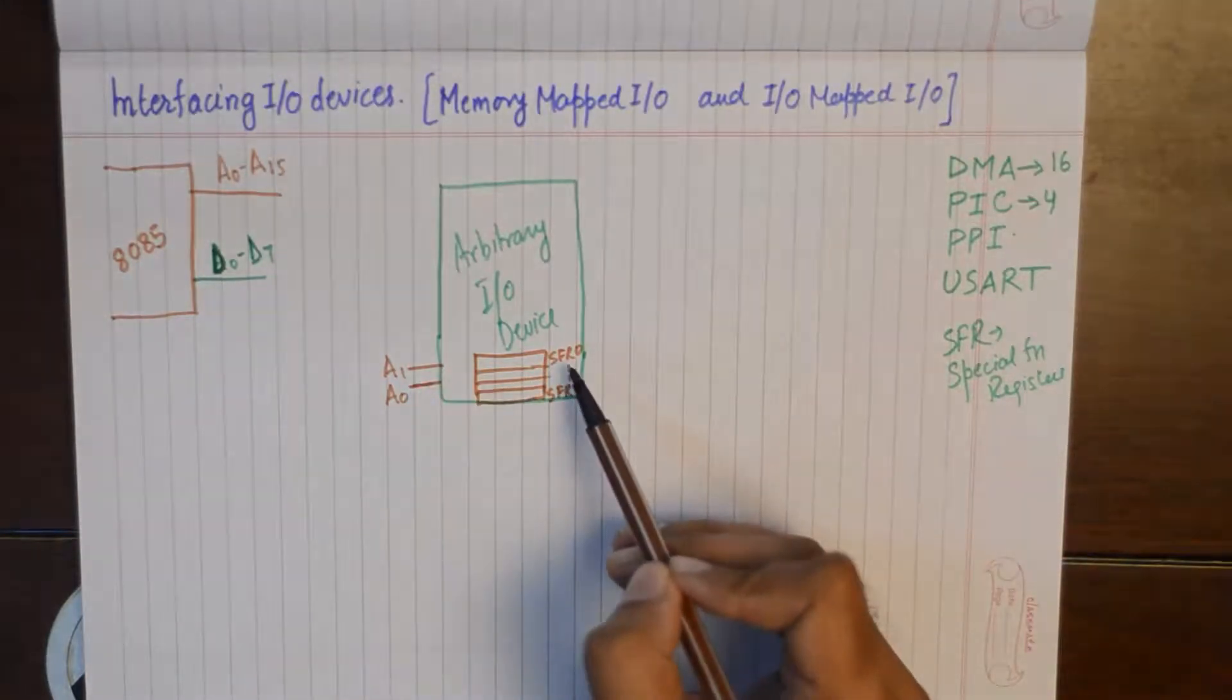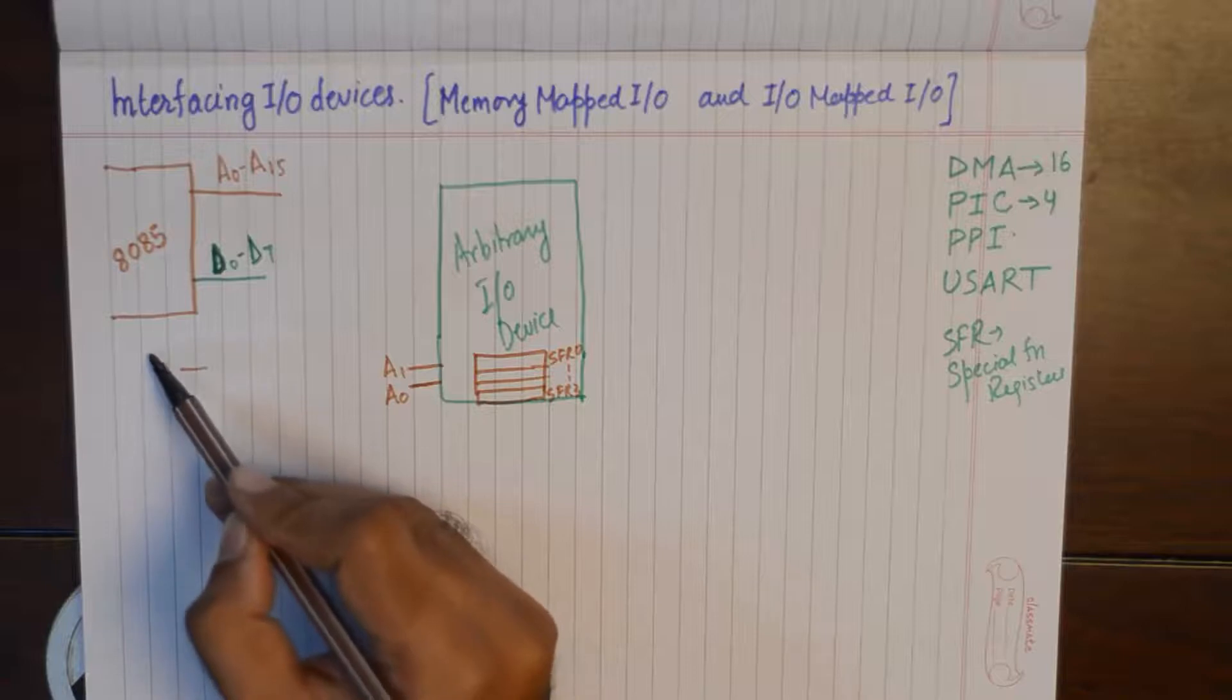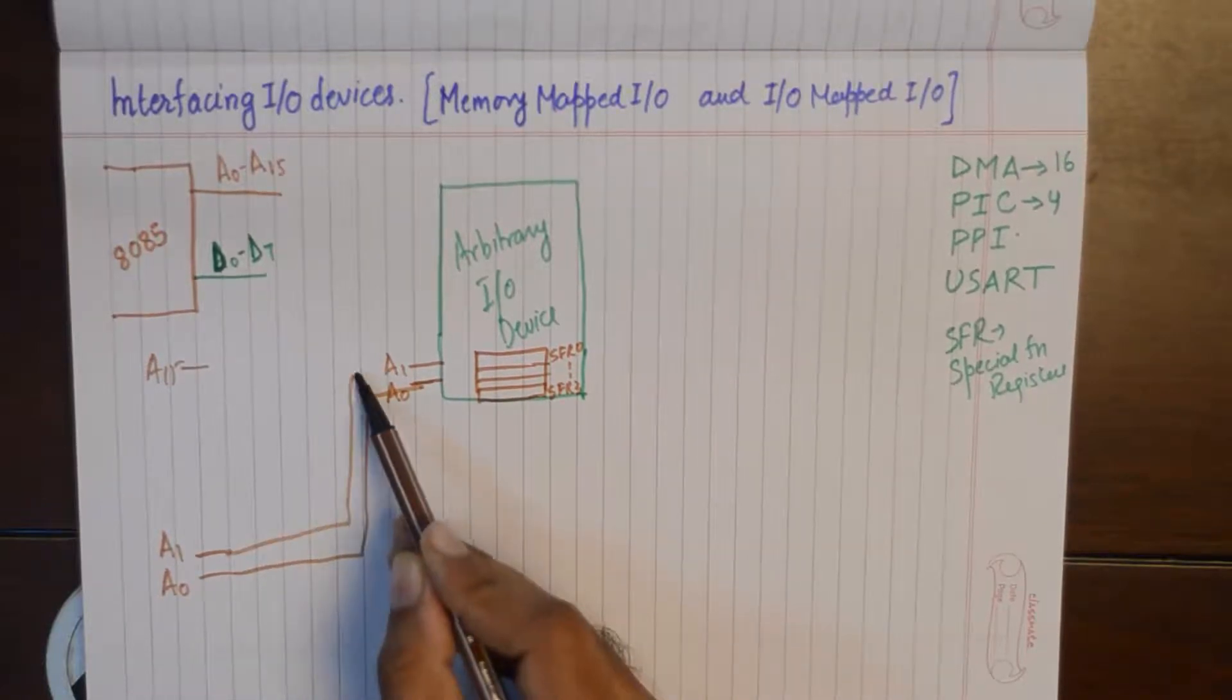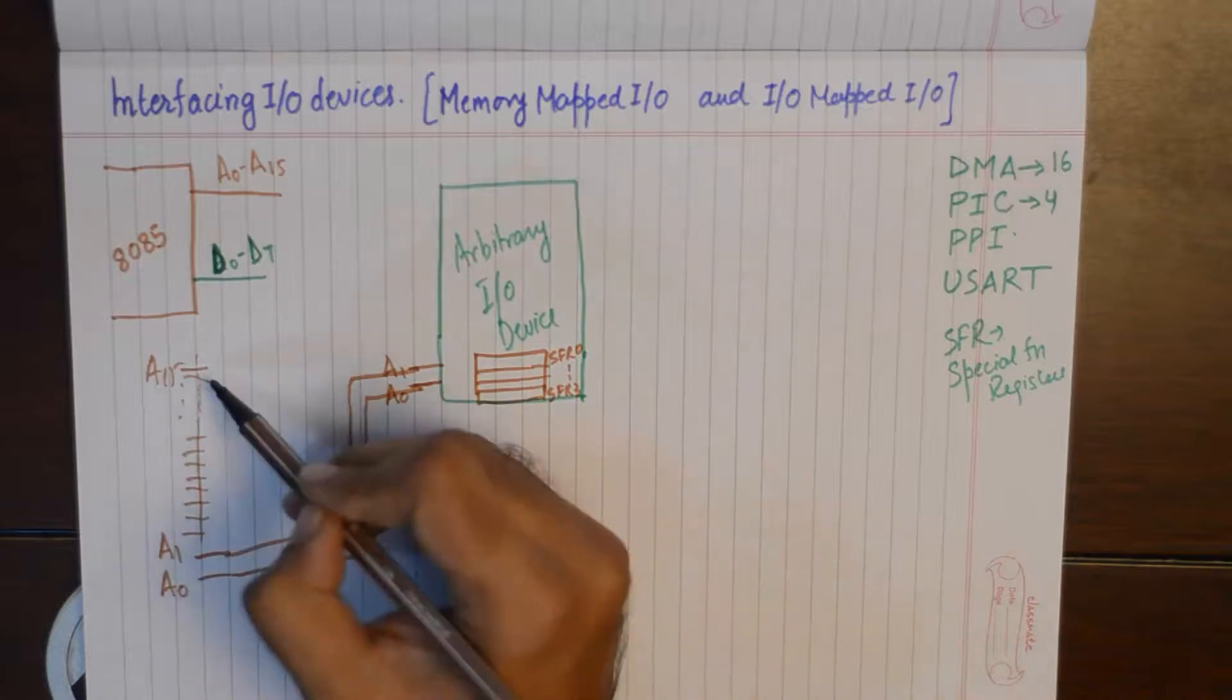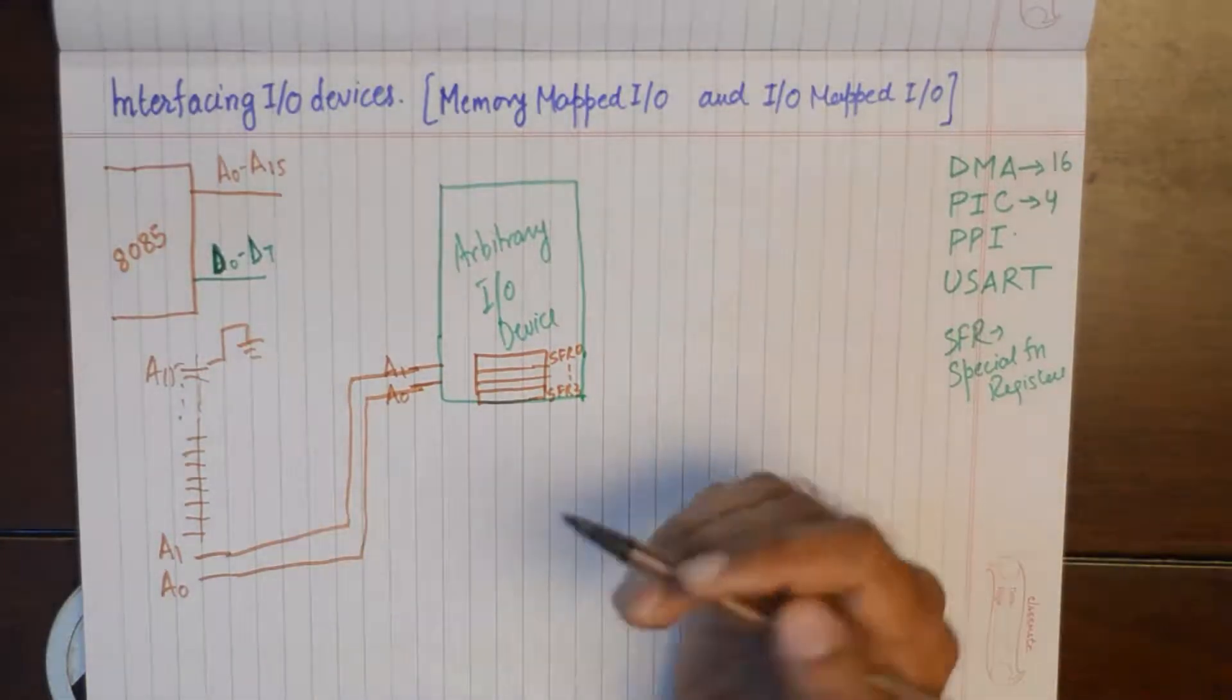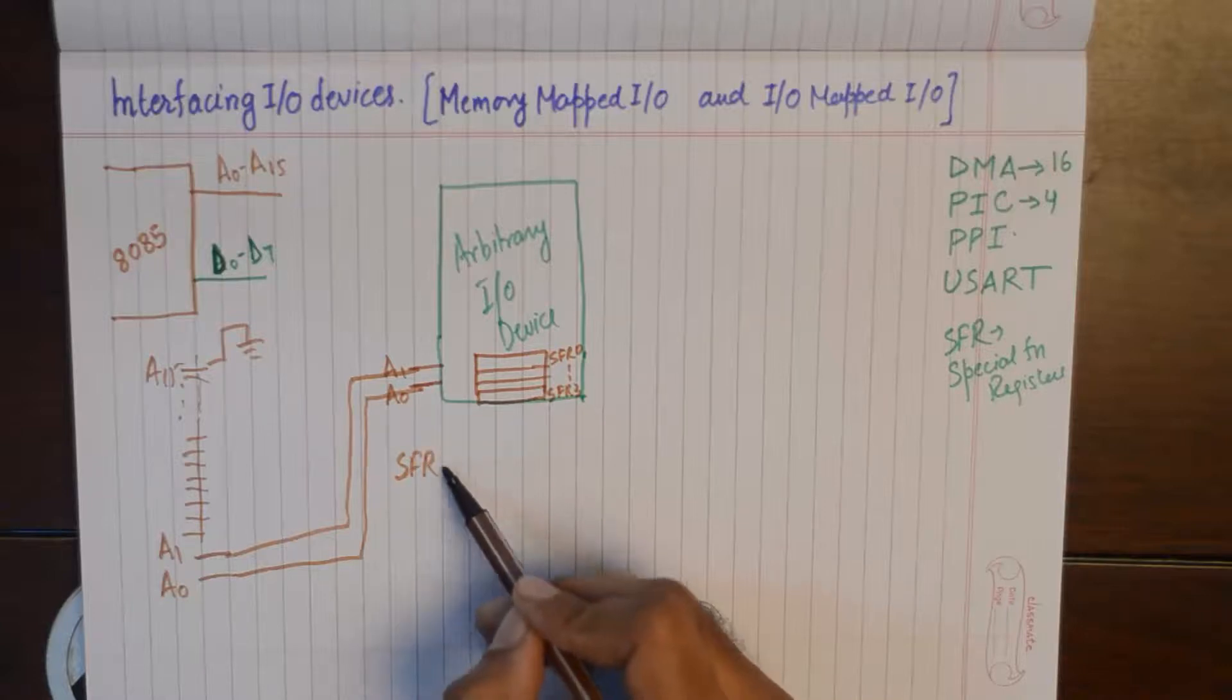Now in order to generate the addresses for the special function registers inside the I/O device, which are just 4 in number, we can either use all the address lines from A0 to A15 inside microprocessor. So what I can do is I can use A0 of microprocessor to connect with A0 of I/O device and A1 of microprocessor to connect with A1 of I/O device. And I can keep all the other address lines to be either grounded, that is 0, or I can connect it to VCC. Let us say for the sake of simplicity I keep all the other lines to be equivalent to 0.